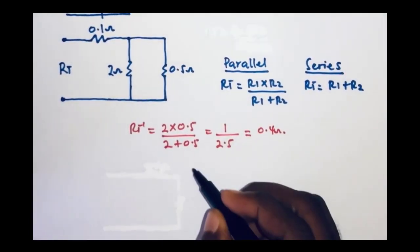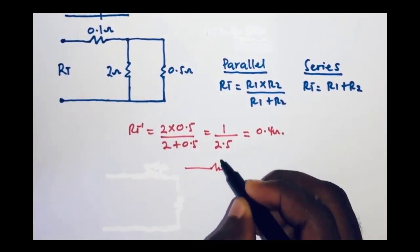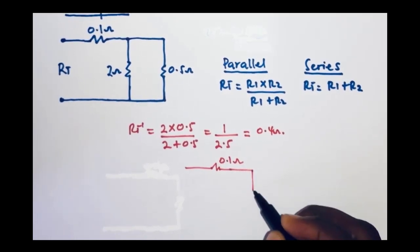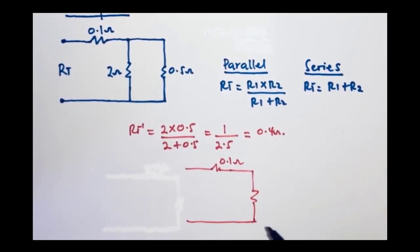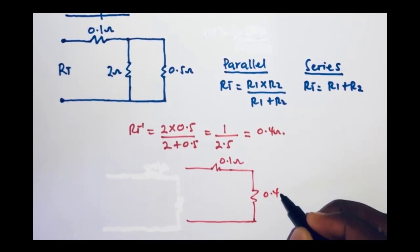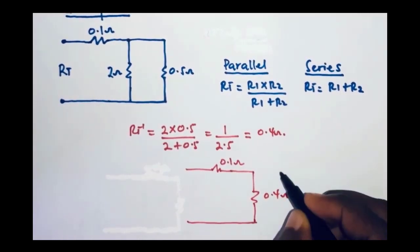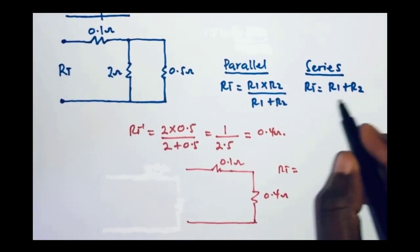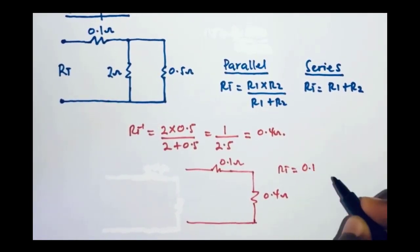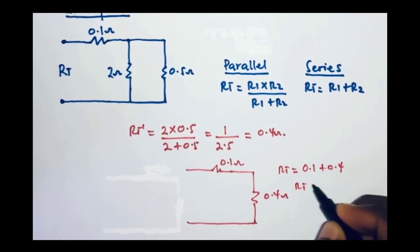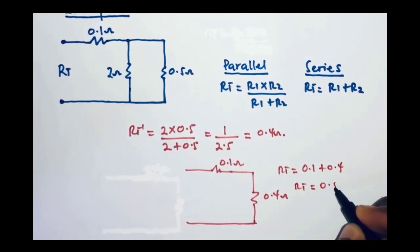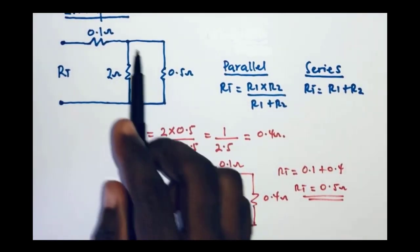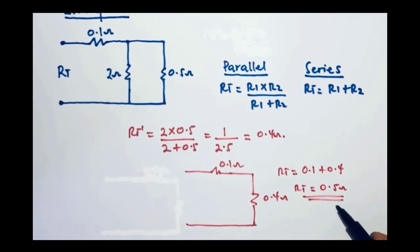Now let's redraw the circuit to simplify analysis. We have the 0.1 ohm resistor connected in series with the equivalent resistance of 0.4 ohms. The total resistance for the entire circuit is therefore 0.1 plus 0.4, which gives Rt equal to 0.5 ohms.